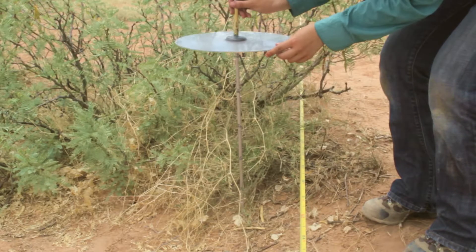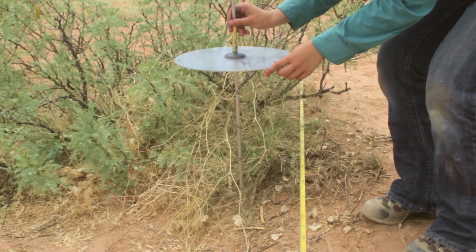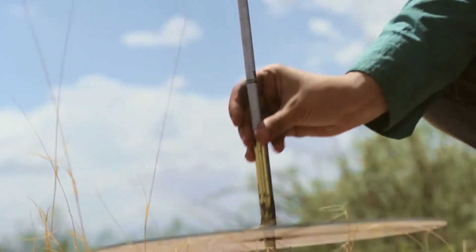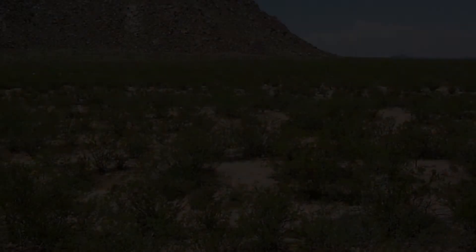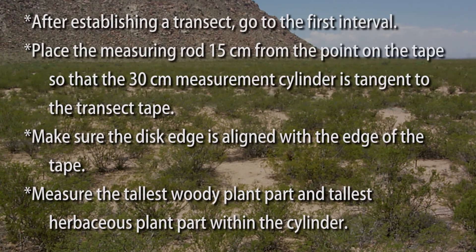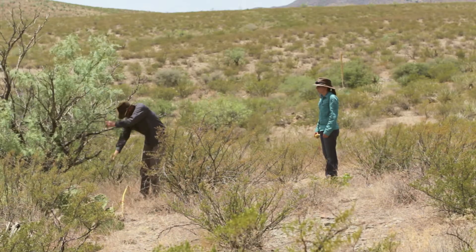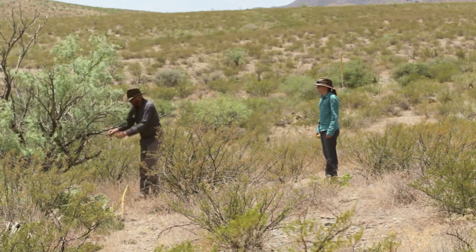Making sure that the disc edge is aligned with the edge of the transect tape, measure the tallest woody plant part and then the tallest herbaceous plant part within the cylinder. Even if the plant has taller plant parts outside the cylinder, only measure plant parts within the cylinder.